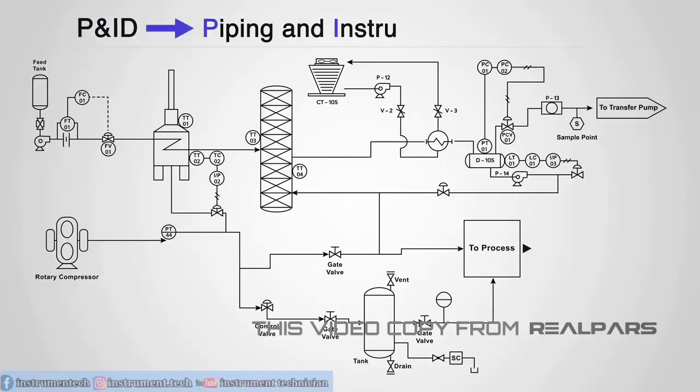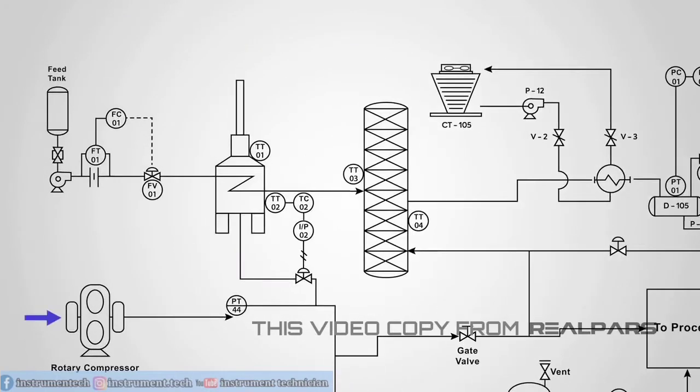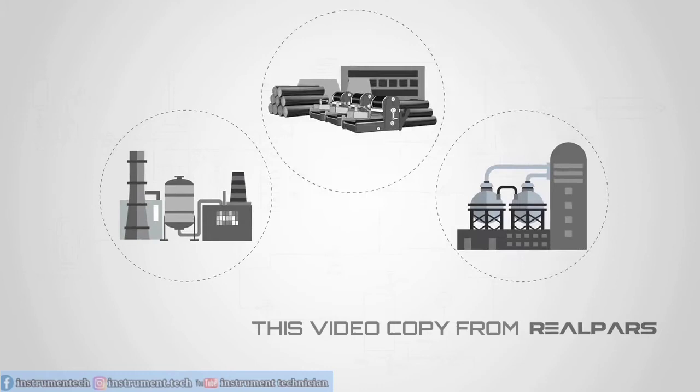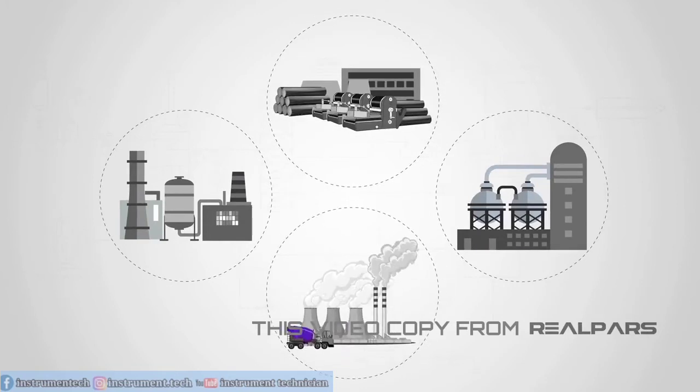PNIDs or Piping and Instrumentation Diagrams to give them their full name are schematic representations of pipelines, equipment, instrumentation, and control systems found in process environments such as oil refineries, chemical plants, paper mills, and cement plants.